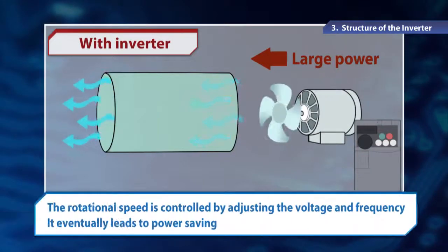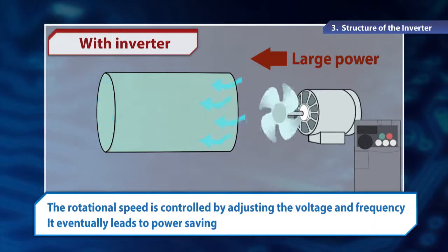With an inverter, the fan rotation can be adjusted to supply the necessary amount of air. It allows us to save on power consumption by adjusting the voltage and frequency and rotate the motors efficiently.